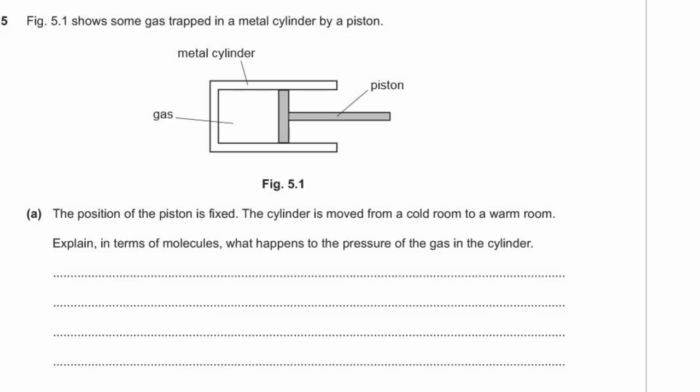Question five: figure 5.1 shows gas trapped in a metal cylinder by a piston whose position is fixed. The cylinder is moved from a cold room to a warm room. We need to explain in terms of molecules what happens to the pressure of the gas in the cylinder.